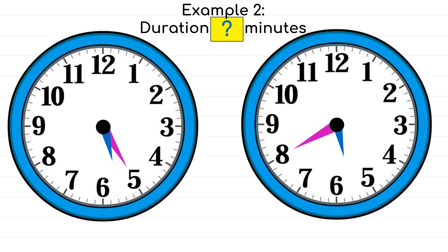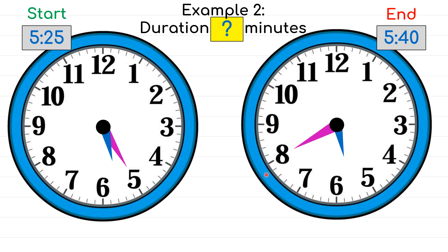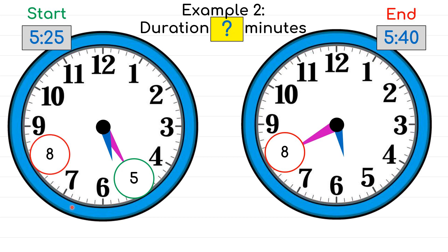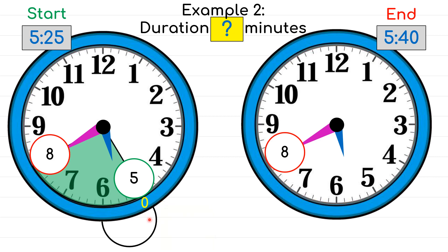Let's try another example — we want to find the duration in minutes. The starting time is 5:25 and the ending time is 5:40. Look at the minute hands: the starting minute hand points at 5, and the ending minute hand points at 8. Start hopping from 5, write 0 first, and skip count: 0, 5, 10, 15. So from 5 to 8, 15 minutes have passed.